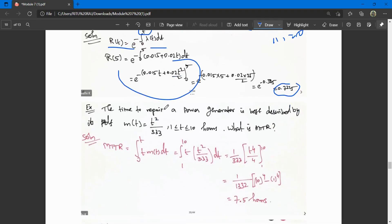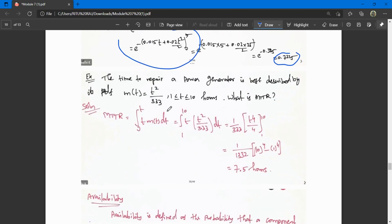Second question: the time to repair a power generator is best described by a PDF - the probability density function. The maintenance function is given as t squared by 333, where t varies from 1 to 10 hours. What is the MTTR?